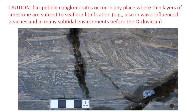One important note of caution: flat pebble conglomerates form when thin layers of limestone get lithified on or just below the seafloor and then get ripped up and moved around by storm waves. So they're not restricted to peritidal settings — in fact they can be fairly common in shallow subtidal environments, at least before the Ordovician. This is because thin layers of limestone could be deposited, preserved, and then lithified.